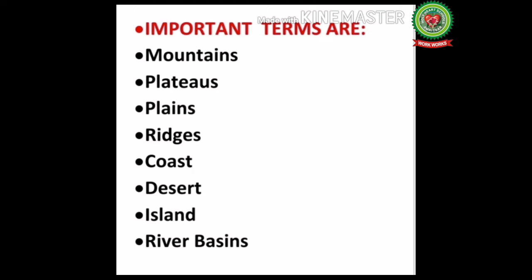Coast: a meeting point of sea and land, example Konkan Coast, Malabar Coast, Coromandel Coast. Desert: a sandy or dry area, example Thar Desert and Sahara Desert. Island: land surrounded by water from all sides, example Sumatra, Java. River basin: an area drained by a river and its tributaries, example Ganga Basin and Indus Basin.